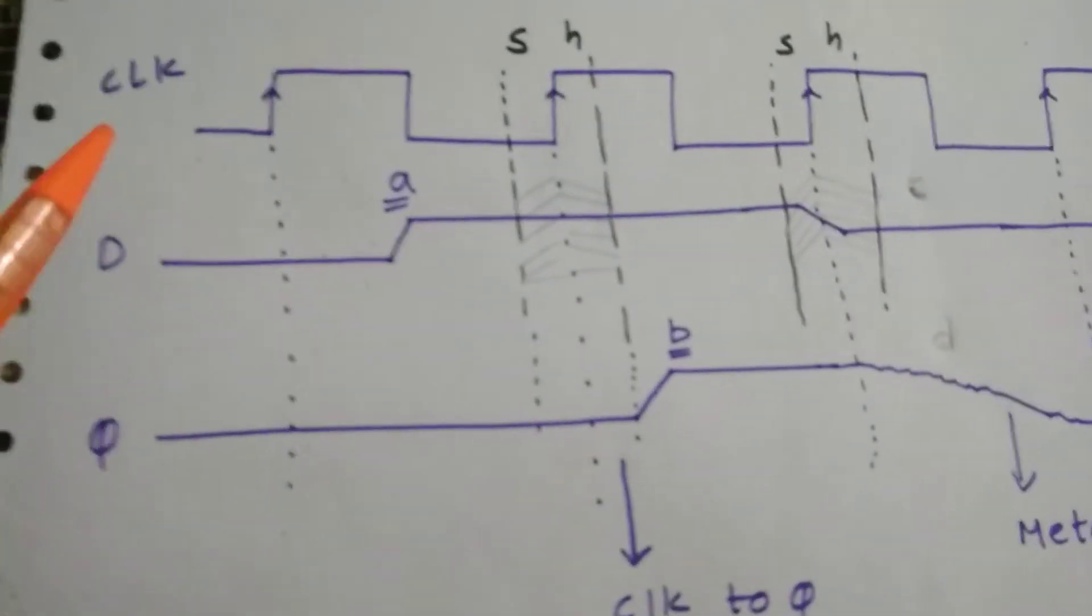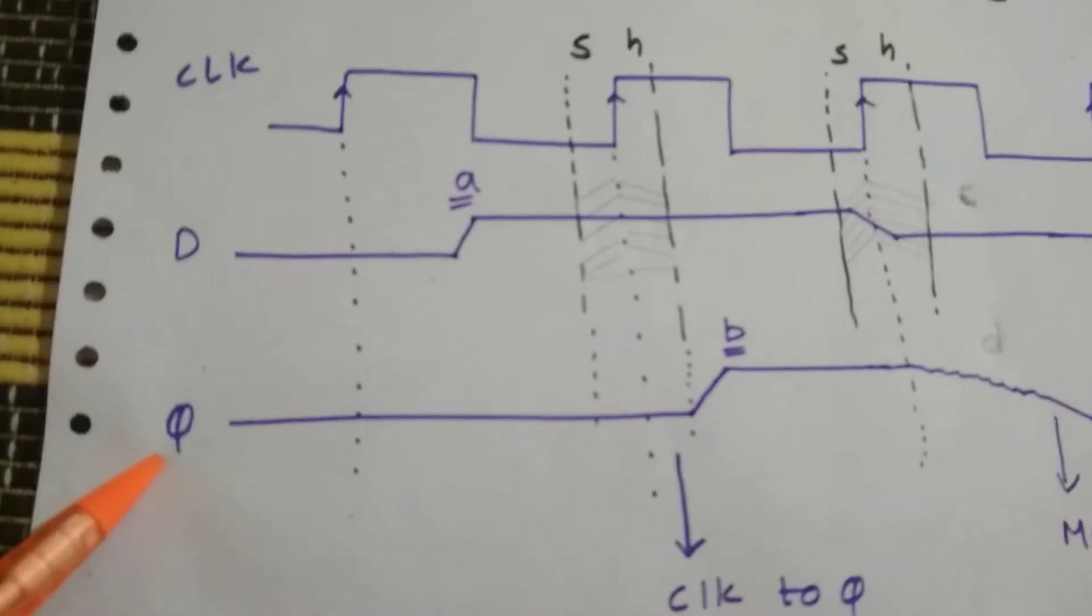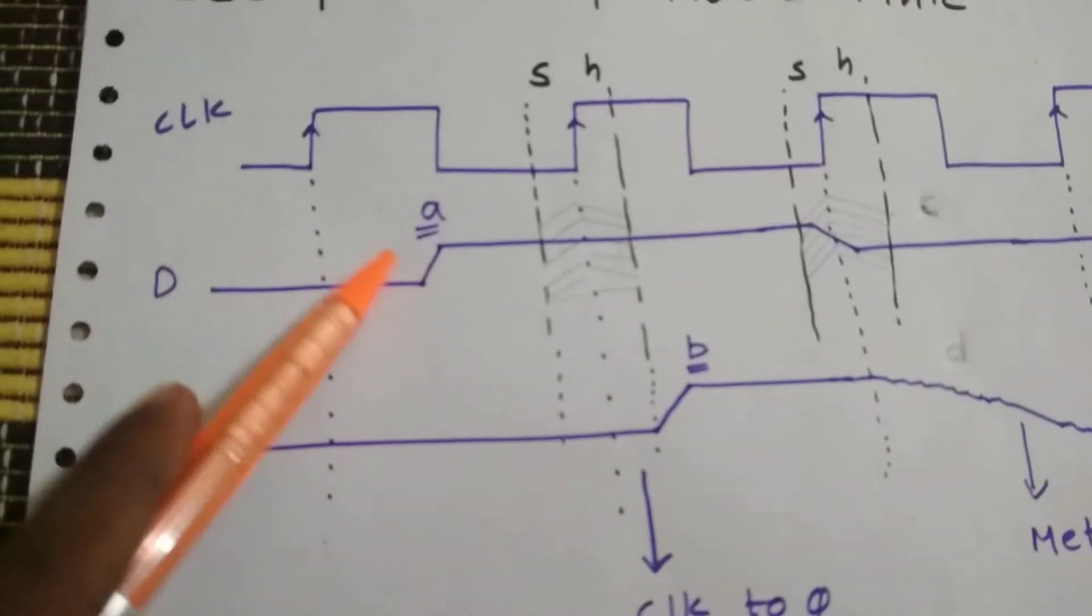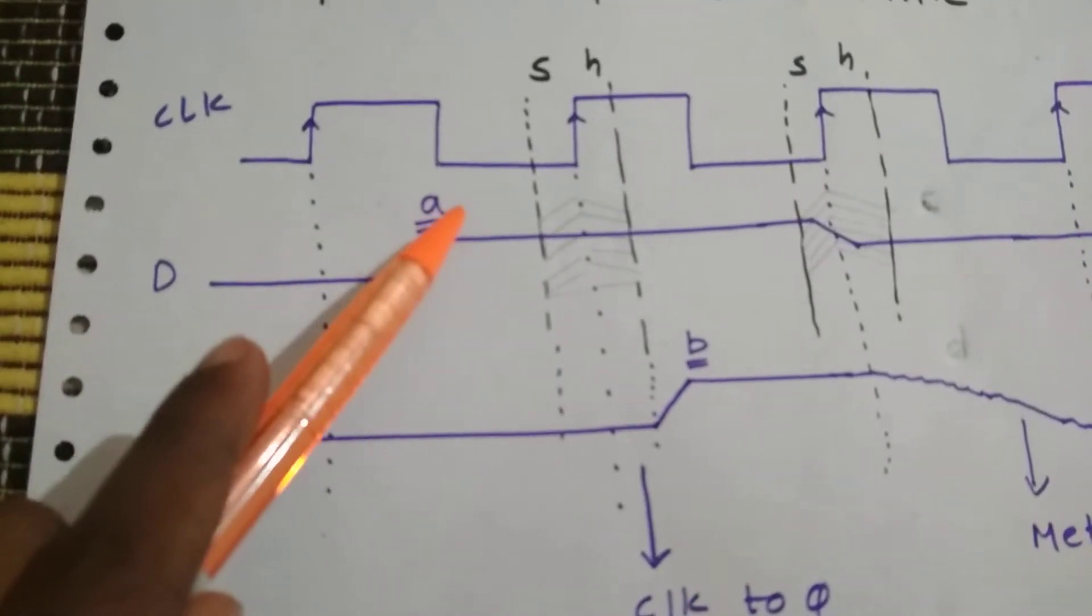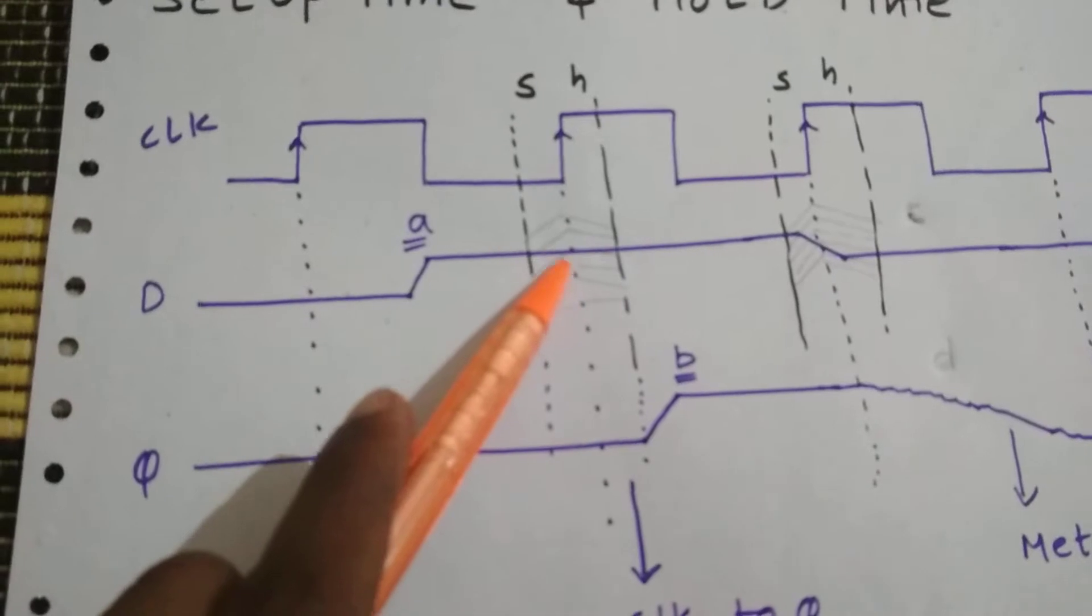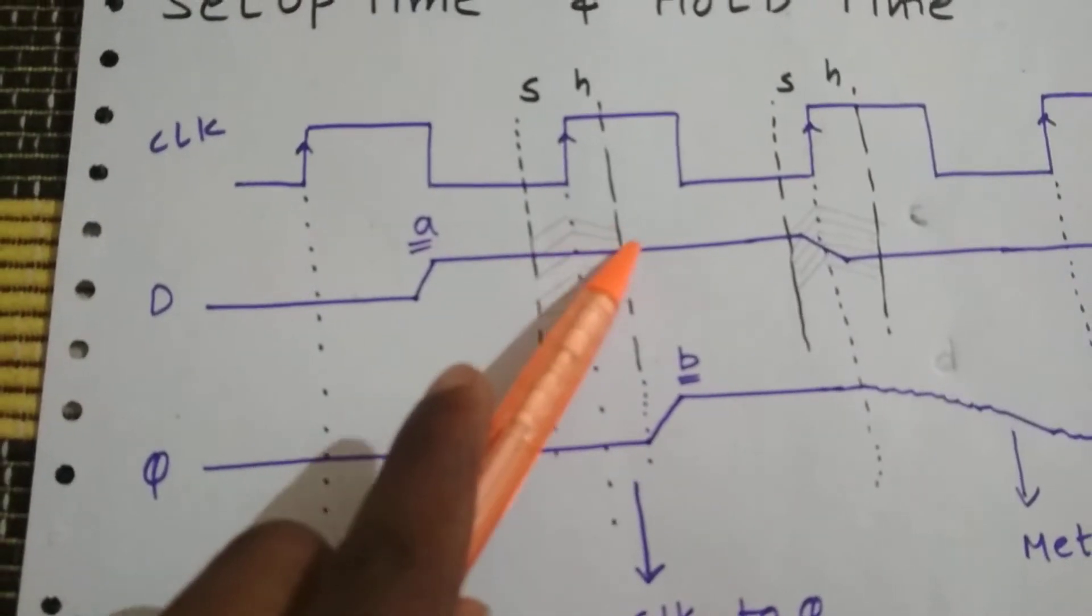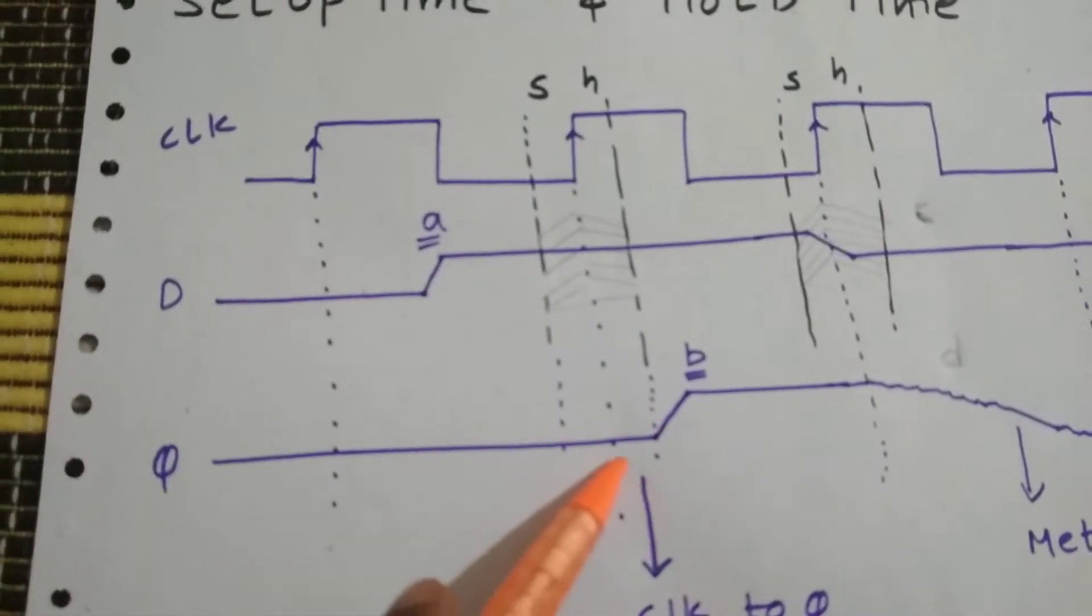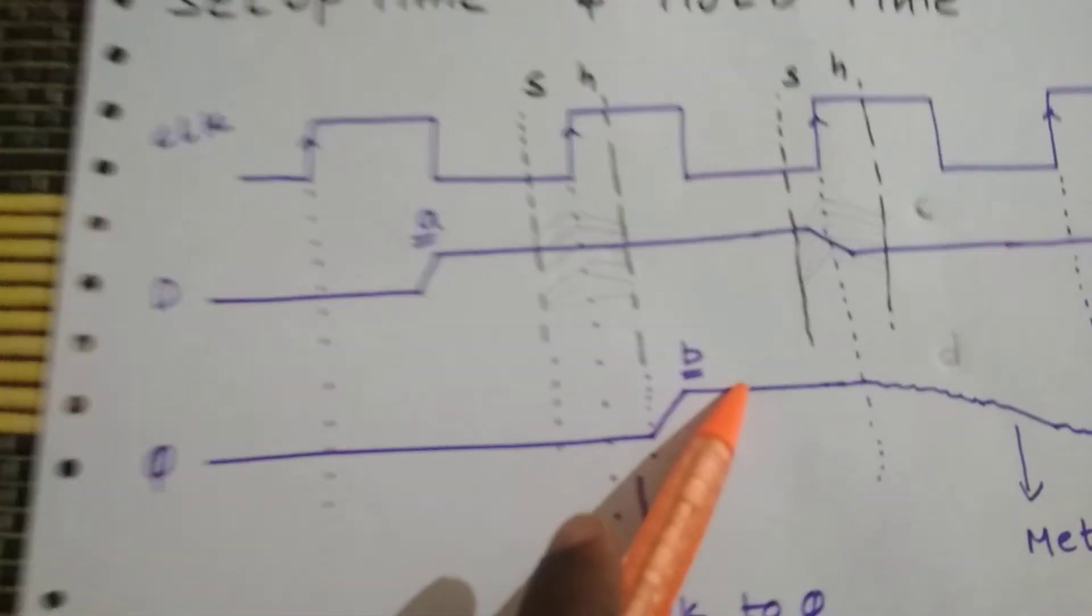So here's an example where D is an input and Q is an output of the flop. The input has not changed. It has settled to 1 over here before the setup window, and it has also not changed in the hold time. So as a result, the output is perfectly fine, no problem.